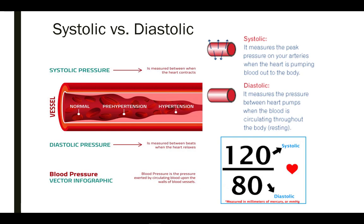Blood pressure is the force of blood pushing against the vessel walls. Blood pressure has two numbers: a systolic reading, which is the top number, and a diastolic reading, which is the bottom number. The systolic measures the peak pressure on your arteries when the heart is pumping blood, whereas the diastolic pressure is the pressure exerted at rest between heart pumps.